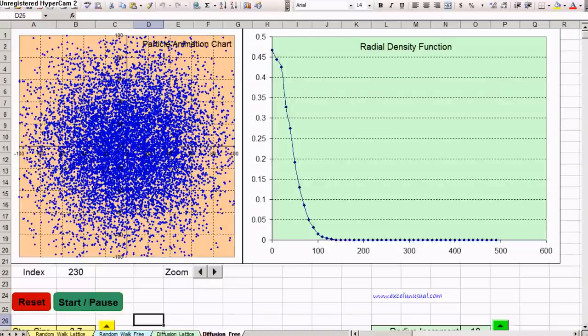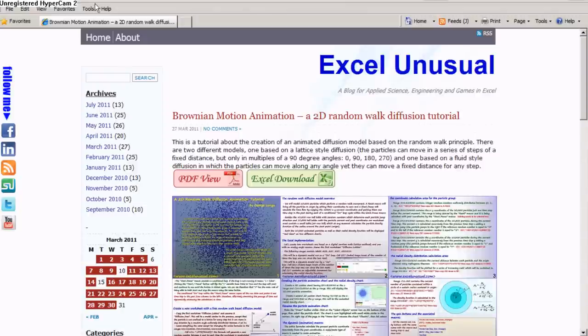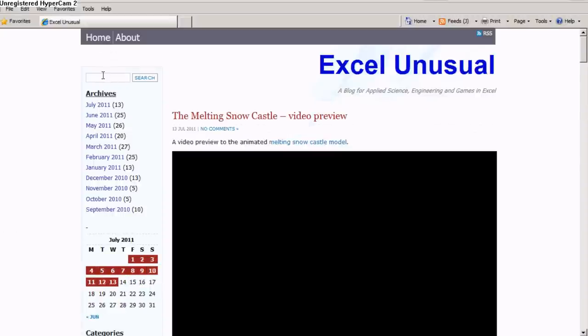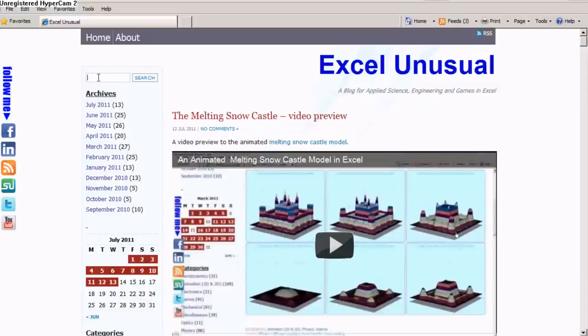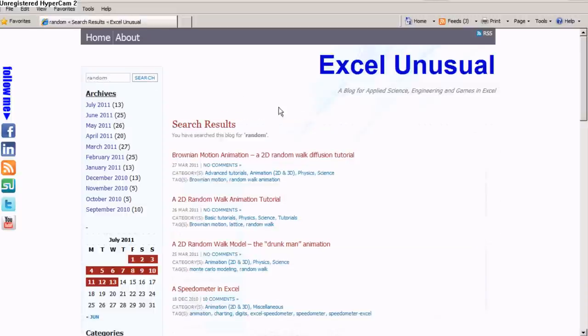If you want to download this model, you can go to my site, my blog, excelunusual.com. You will land on the home page, you can type here random in the search box and you get four results, three are relevant.